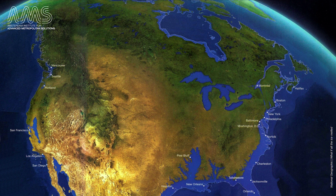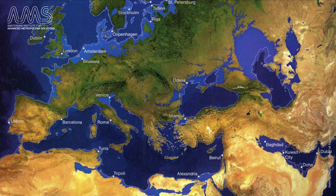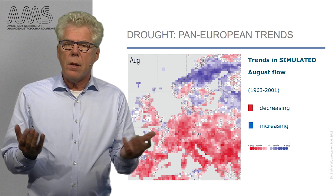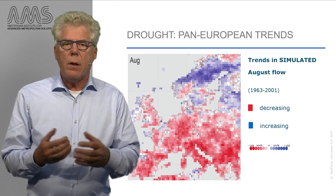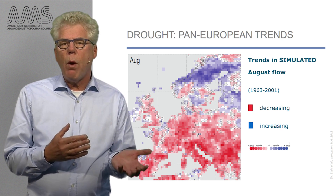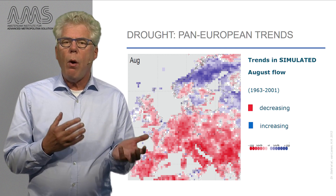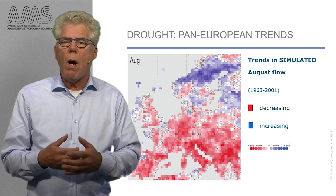Under maximum estimated sea level rise, here you can see North America, here you can see Asia, and Europe is presented here. In addition to this, we have a map of the current coastal groundwater impacted by salt water intrusion for Europe. As you can see, the areas prone to coastal flooding are overlapping with the regions prone to salt intrusion into the groundwater.